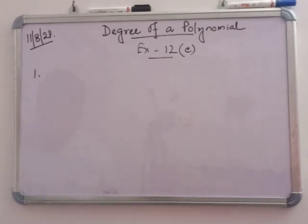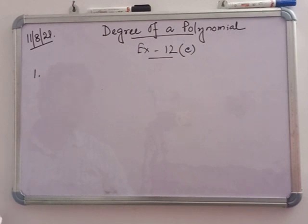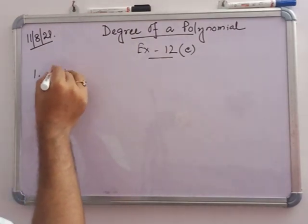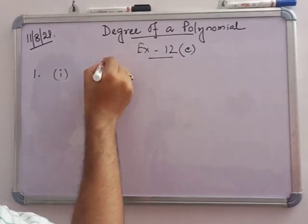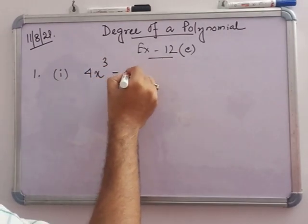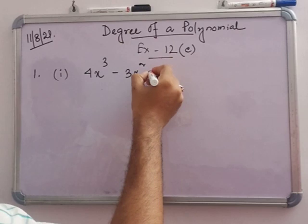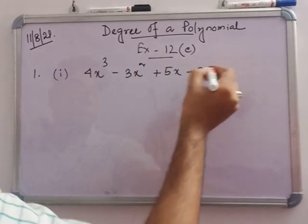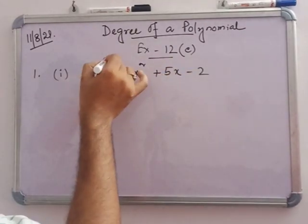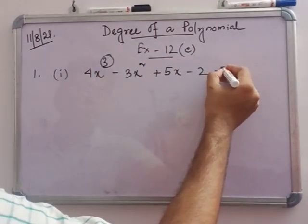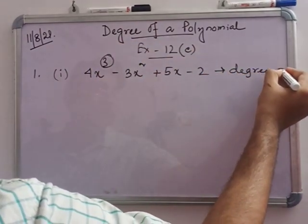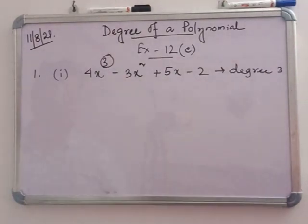Now in exercise 12c, you have to find which expressions are polynomials and find the degree of the polynomial. In number 1: 4x cubed minus 3x squared plus 5x minus 2. The highest power is 3, so the degree is 3 and it is a polynomial.